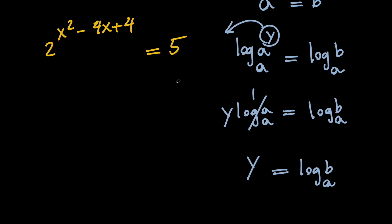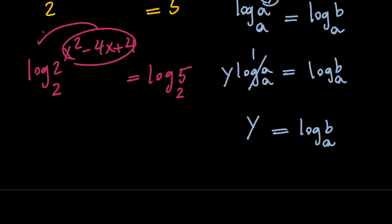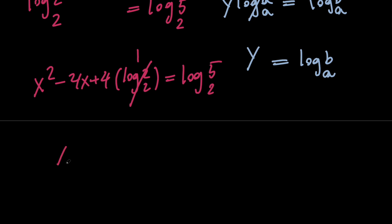So we need to take the log of both sides with base 2. We're going to have log of 2 to the power of x squared minus 4x plus 4 with base 2 equals log 5 with base 2. Next, let's go ahead and take the power and bring it in front. So we're going to have x squared minus 4x plus 4 times log of 2 with base 2 equals log of 5 with base 2. Notice that log of 2 with base 2 is 1, so we end up with x squared minus 4x plus 4 equals log 5 with base 2.